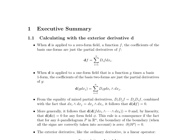Now let's take a look when d is applied to a one-form field — something that looks like a function g times a basis one-form. The coefficients are going to be the partial derivatives of g multiplied by basis two-forms. Note that the variable the derivative is being taken with respect to matches the one-form that is being wedged with the original one to create this basis two-form.